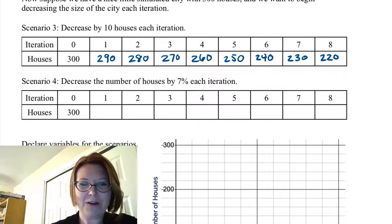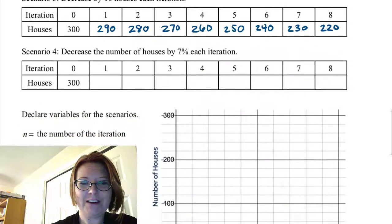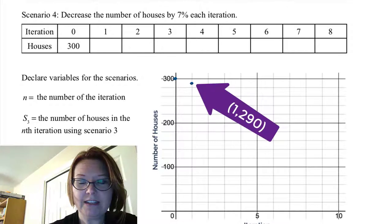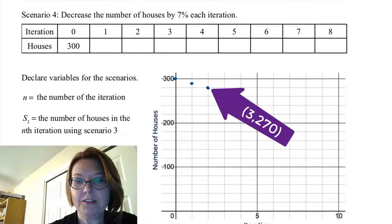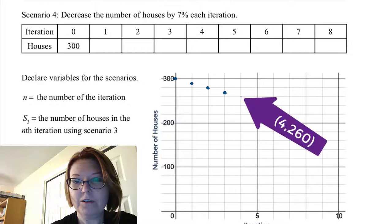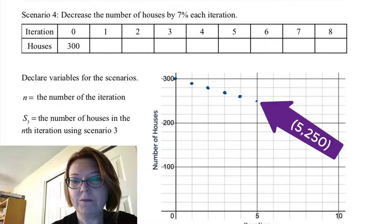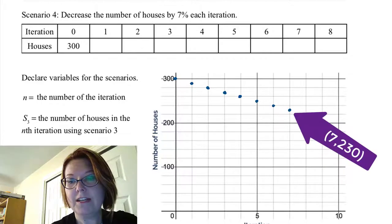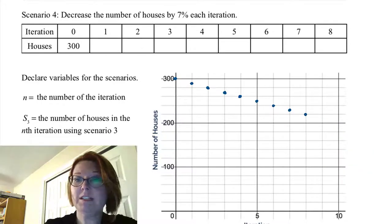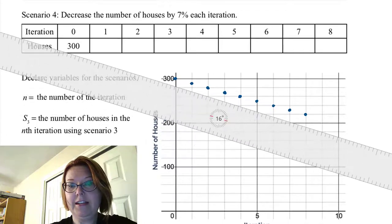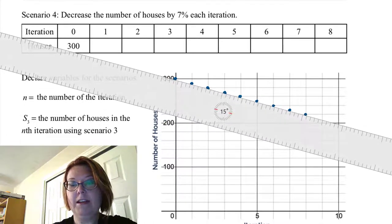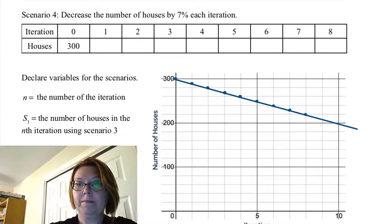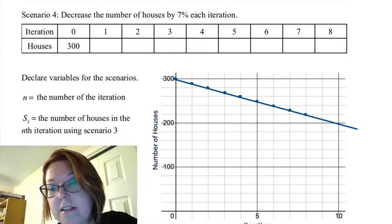Why don't we just go ahead and graph that while we're here. So we've got 0, 300, 1 to 90, 2 to 80, 3 to 70, 4 to 60, 5 to 50, 6 to 40, 7 to 30, and 8 to 20, which is again that nice line. This one is now a decreasing line. So there's our scenario three.